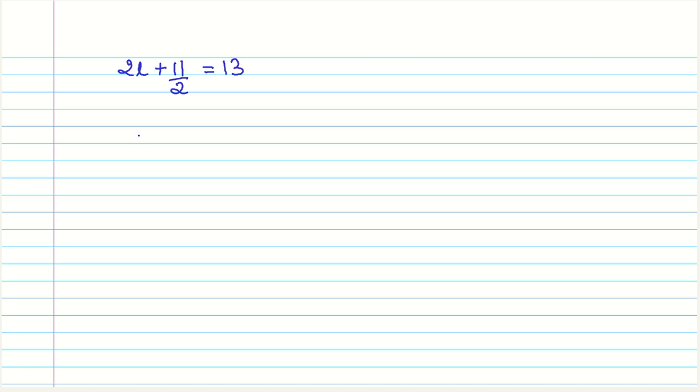Now, let us proceed to... So, the first thing we will do is transpose this 11 by 2 onto this side. That is the right-hand side. So, we have 2L equals 13 minus, changing the sign, because we are transposing it, 11 by 2.